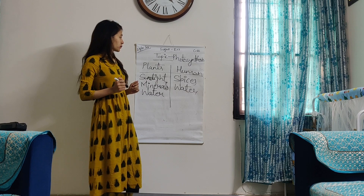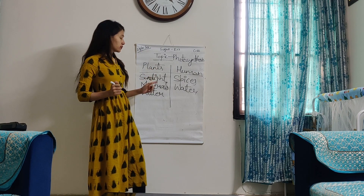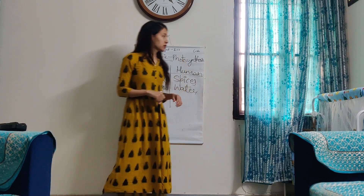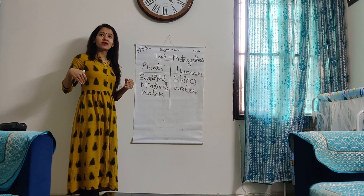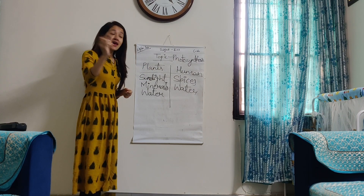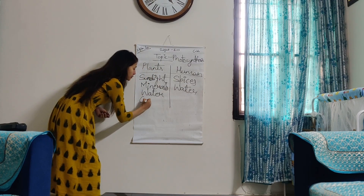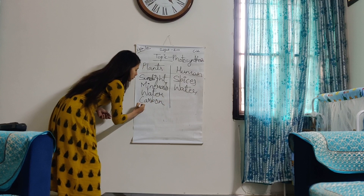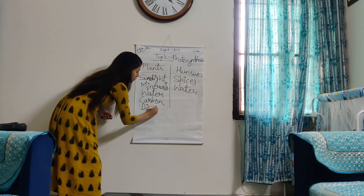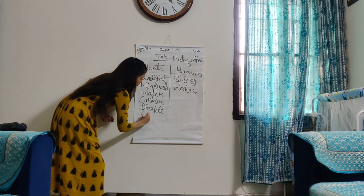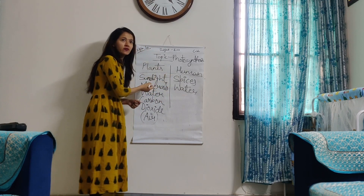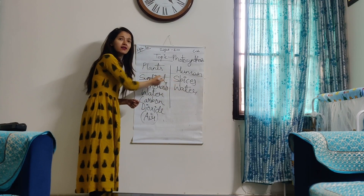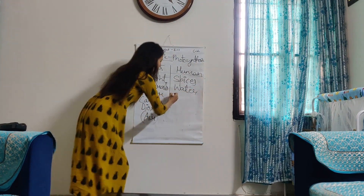Now tell me, carbon dioxide — do humans take carbon dioxide or do plants take carbon dioxide to prepare food? Yes. Plants need CO2, or carbon dioxide, or we could also say air. Fire — do plants need fire to prepare the food? Humans. Very good. Fire is needed by the humans to cook the food.